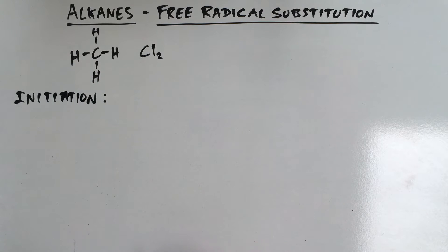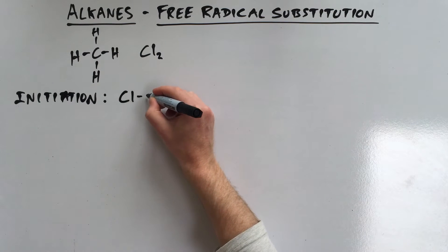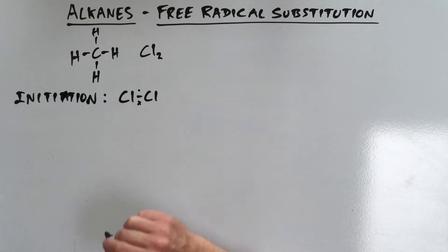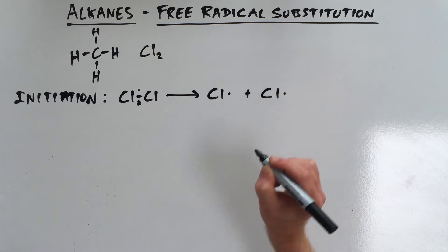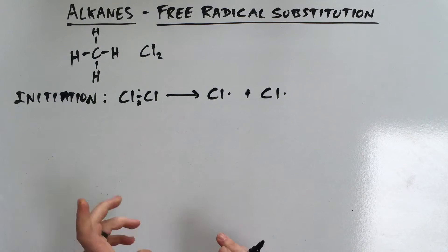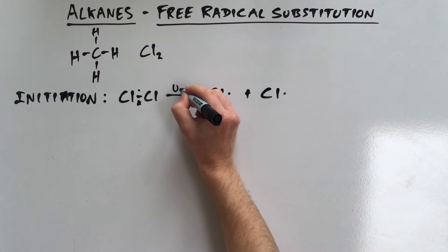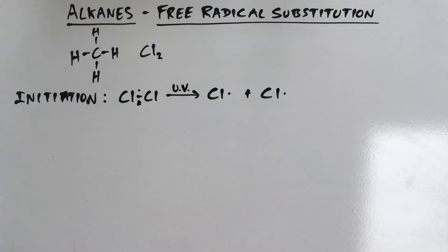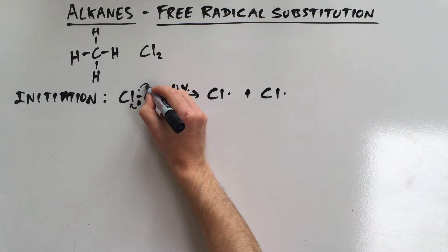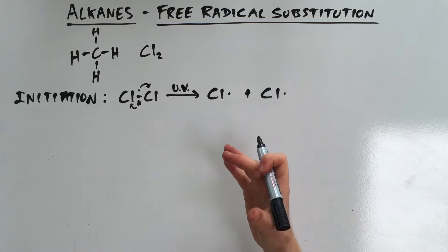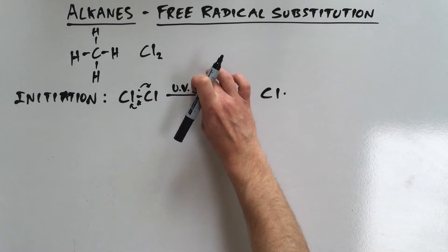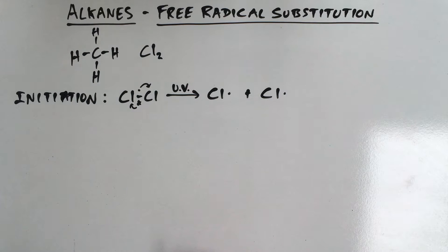In the initiation step, this is where we form our free radical in the first place. A chlorine molecule, Cl₂, splits to form two chlorine free radicals. This doesn't happen spontaneously — it requires UV light. The UV light causes homolytic fission, where one electron goes one way and one goes the other to form the two free radicals. If you put chlorine in the dark, this does not happen.